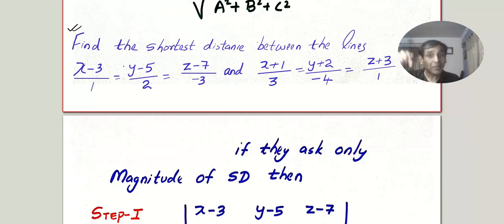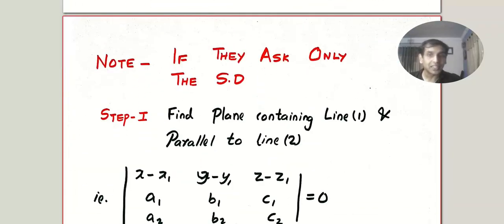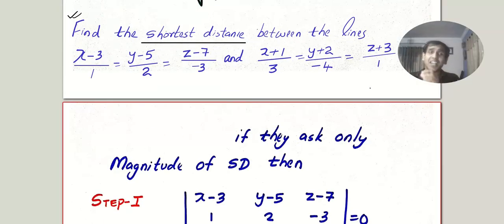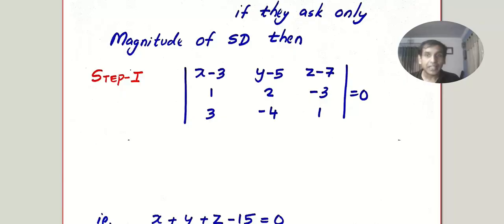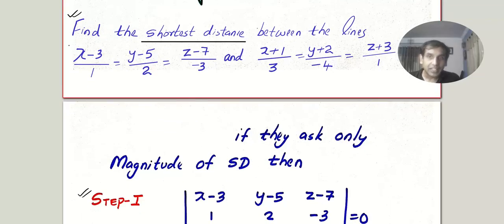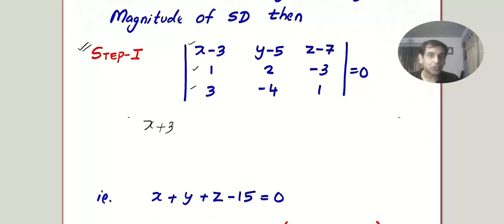Let's work out the same question using the shortcut. Notice the difference: 'find the shortest distance and its equation' versus 'find the shortest distance' only. In the second question they ask only the distance and the method is super easy. Step 1: create a plane. Take the numerator of Line 1, the denominator of Line 1, and the denominator of Line 2, and expand the determinant.